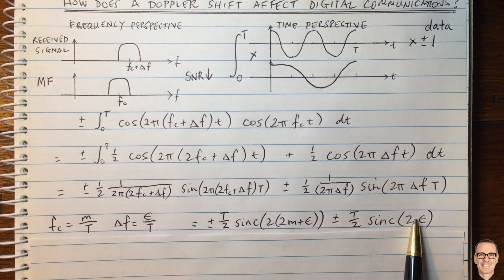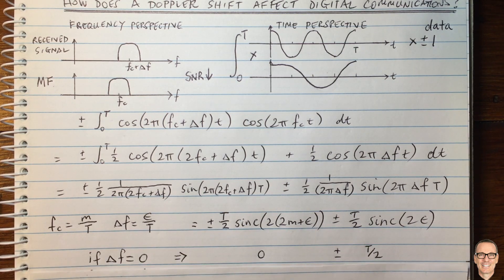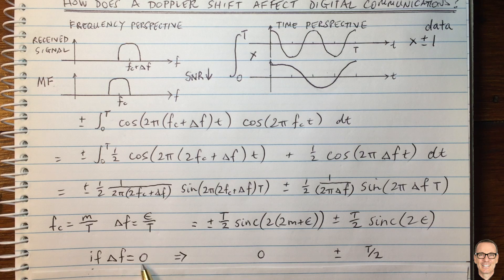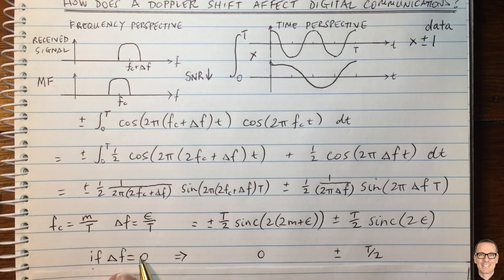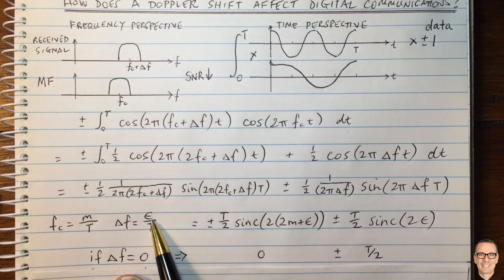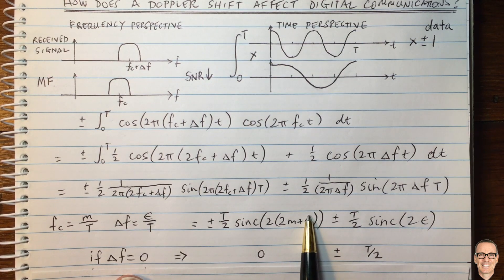So now let's try to understand this. We'll start by considering simply the case when delta F equals zero to see if this makes sense. If delta F equals zero, then epsilon is zero. So this term disappears.